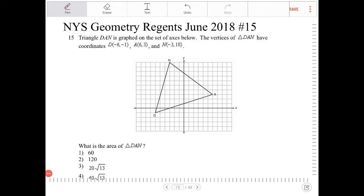Triangle DAN is graphed on the set of axes below. The vertices of DAN have coordinates D(-6, -1), A(-6, 3), and N(-3, 10). What is the area of DAN?